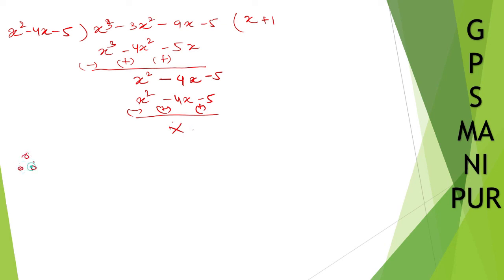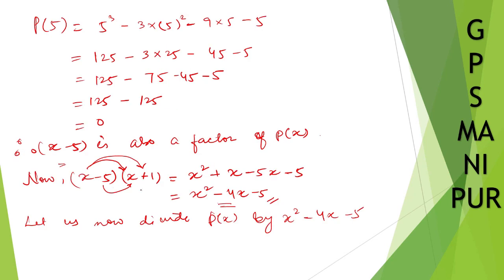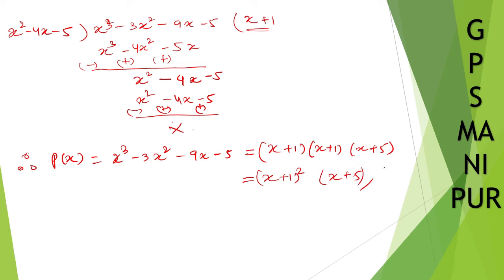So therefore x plus 1 is also confirmed as a factor. Therefore, p(x) which equals x cubed minus 3x squared minus 9x minus 5, equals (x plus 1)(x plus 1)(x minus 5), which we can write as (x plus 1) squared into (x minus 5). That's all, thank you so much, we will meet in the next video.